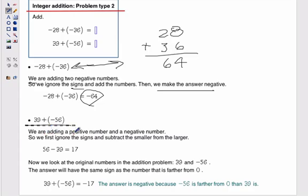When we have a positive and a negative, we first ignore the signs and subtract the smaller from the larger. It doesn't matter what's what. If the signs are different, we just subtract the smaller one from the larger.